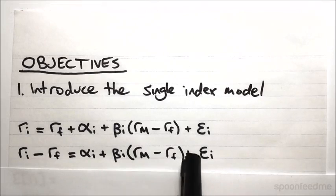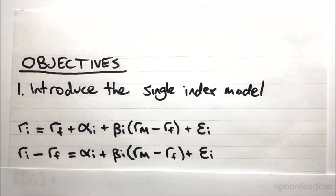So we're familiar with this part in the middle, the beta times the excess return on the market. It's the same thing as what it was in the capital asset pricing model.